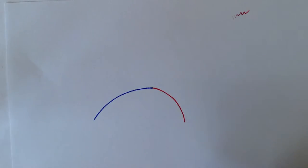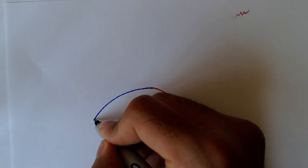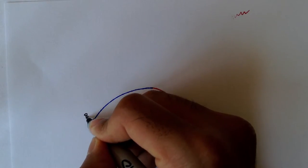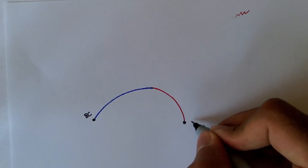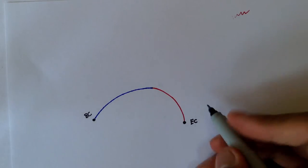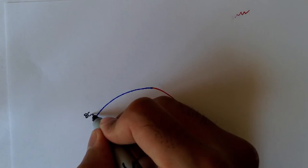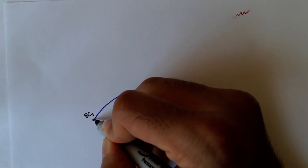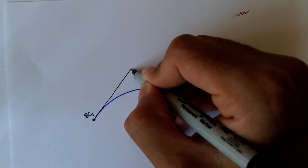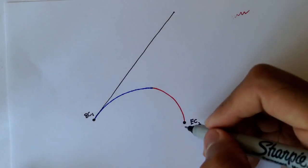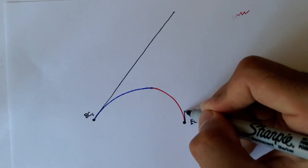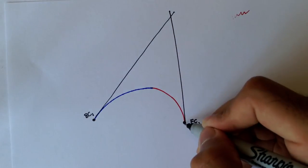These two curves together form one giant curve. I'm going to draw a tangent from this point — I'll call this EC, and really this is the EC for curve 2 but also the BC for curve 1. The tangent is going to extend out here, and then this tangent is going to come out here.